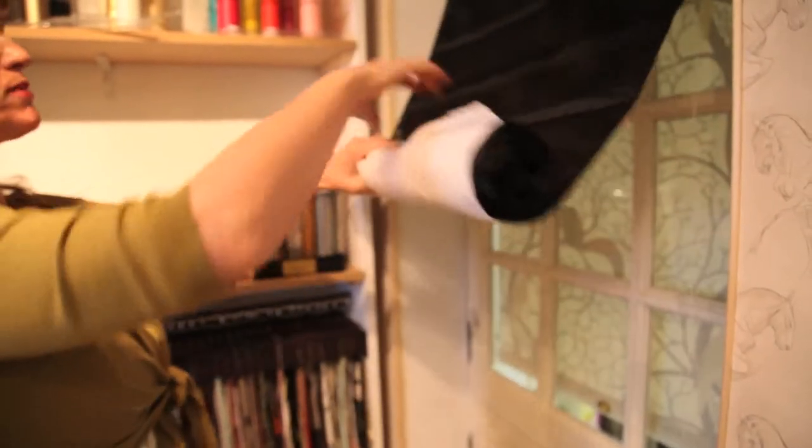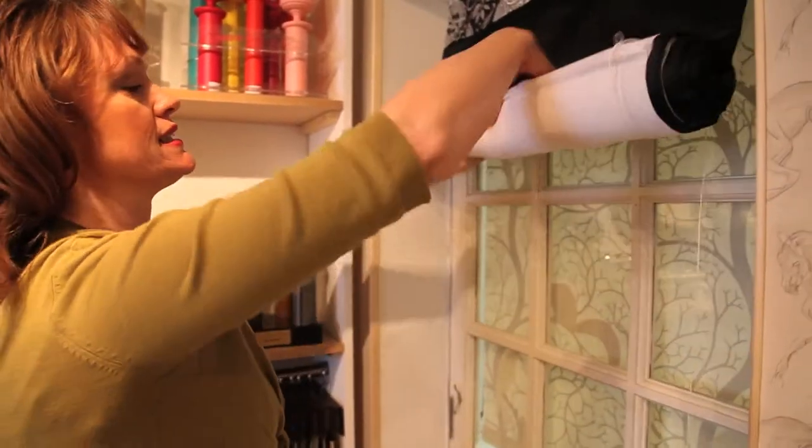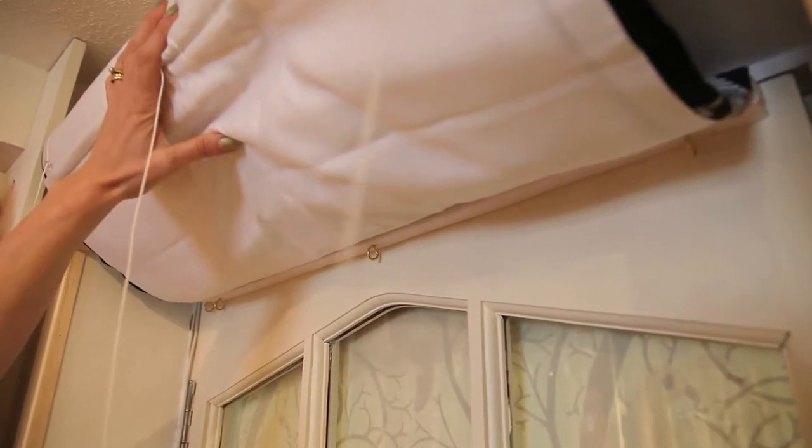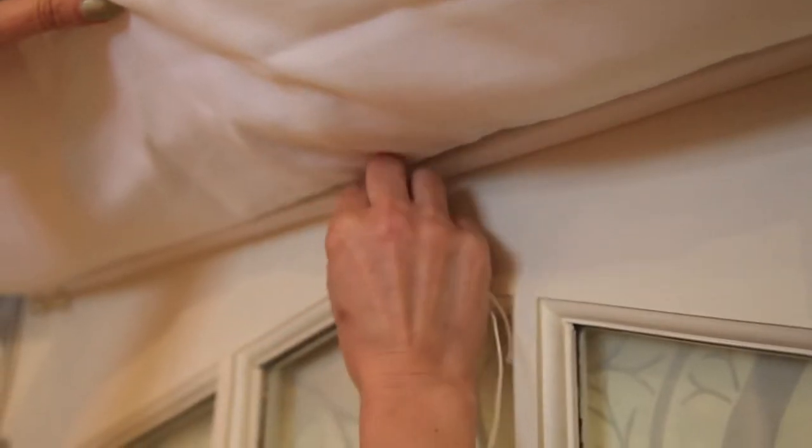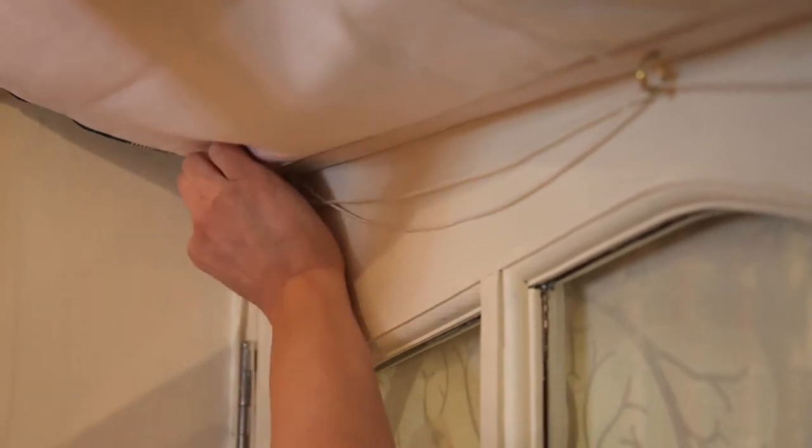To make this easier, I'm just going to roll up the blind so I can see what I'm doing, and then we'll thread through the first, through the second, through the third. Second cord will go through the guide at the end, and our last one is going through here.